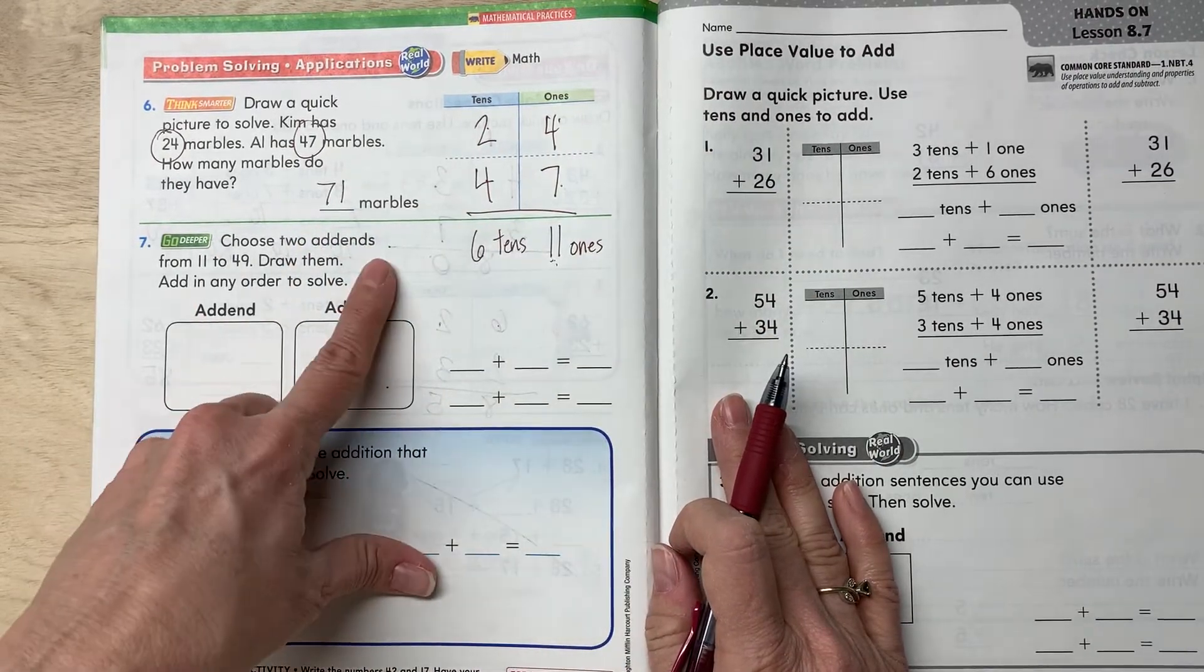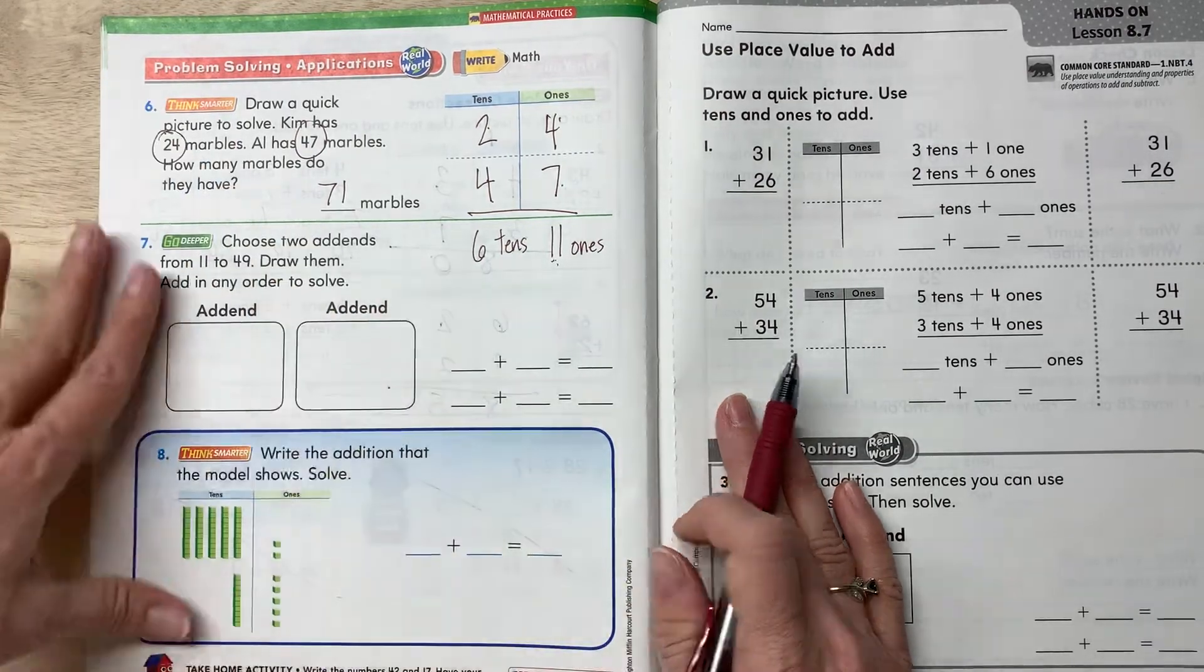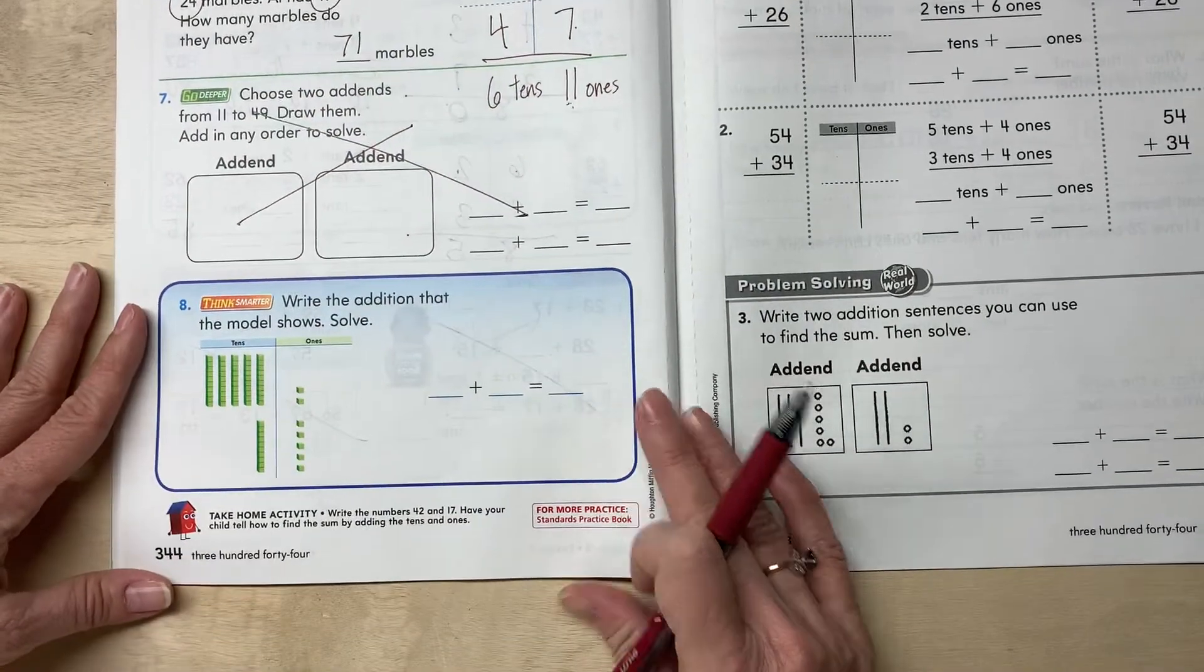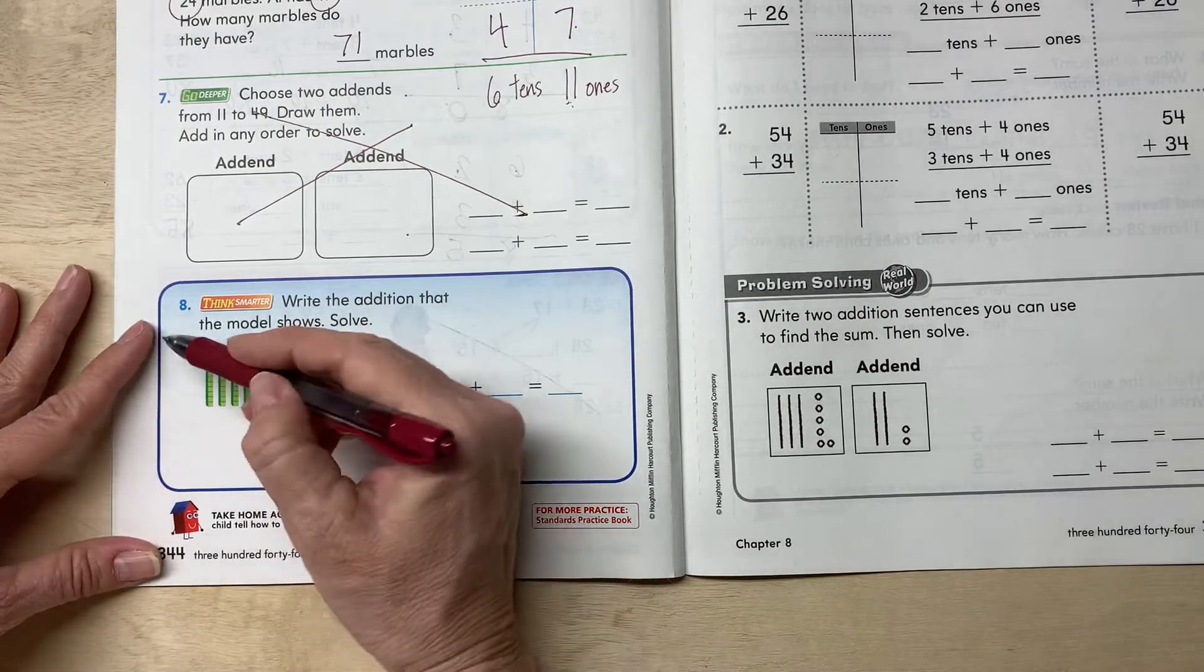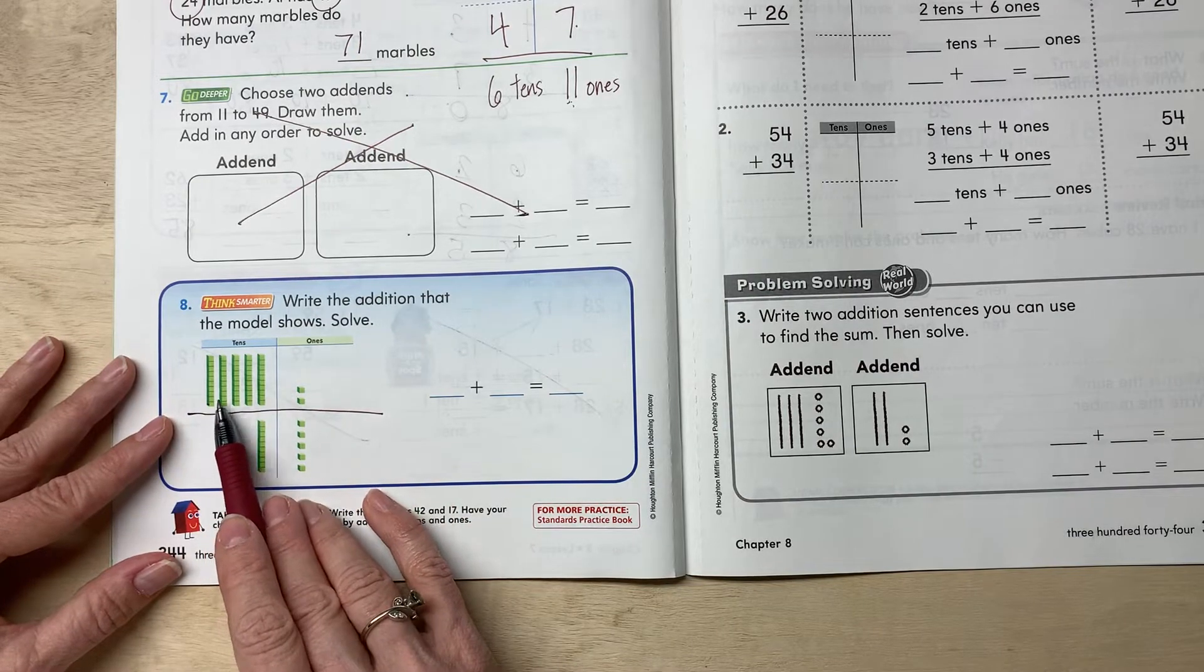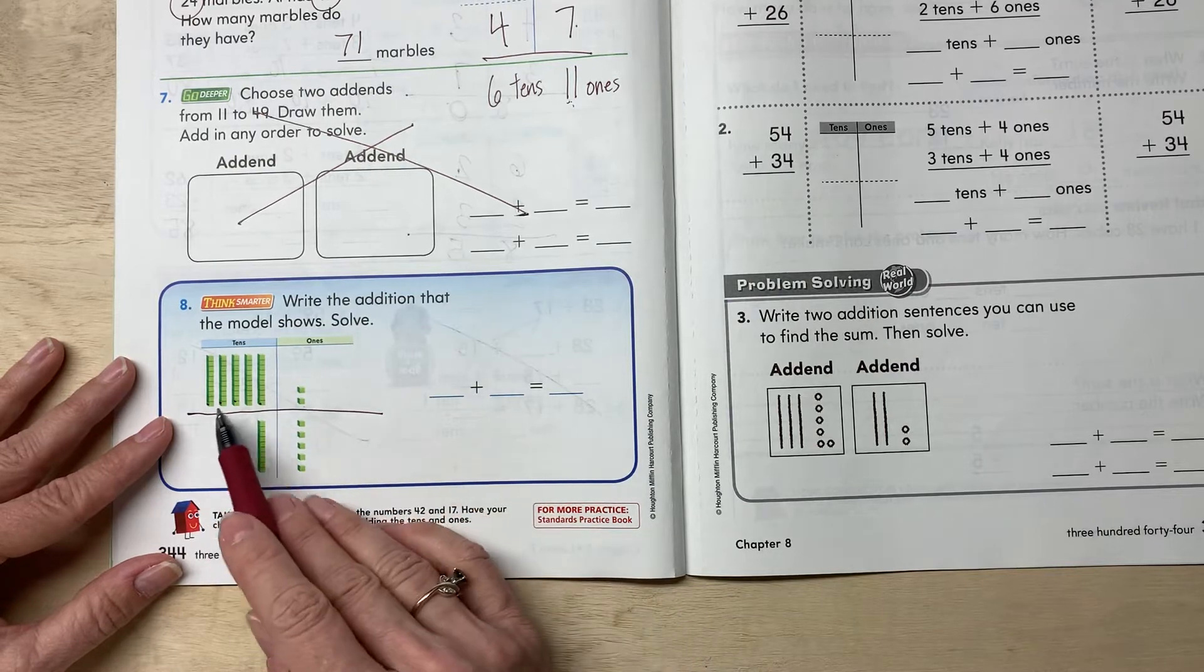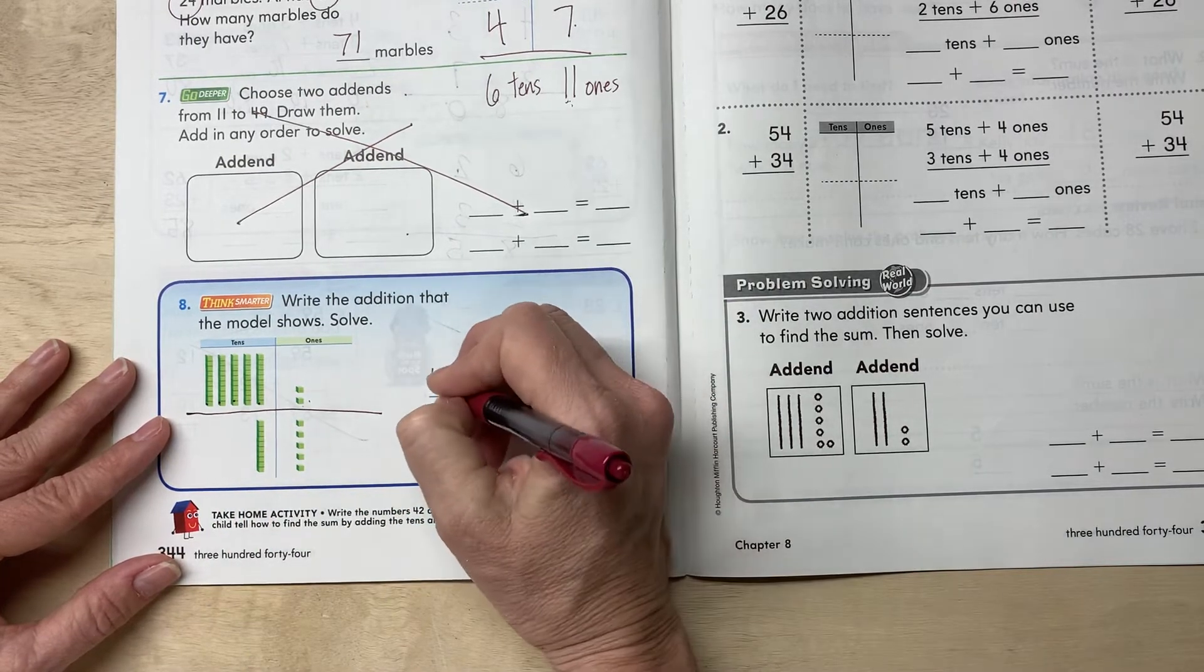Choose two add-ins from 11 to 49. Draw them, add in any order to solve. Okay, we're not gonna go into the go deeper. You can cross that out. Let's just come down here and solve. So here we go. What is our number? Let's draw a line across like they were doing for us so we can keep track of them. So what number is this first one? I have one, two, three, four, five tens, and two ones. What number is five tens and two ones? Yeah, 52.